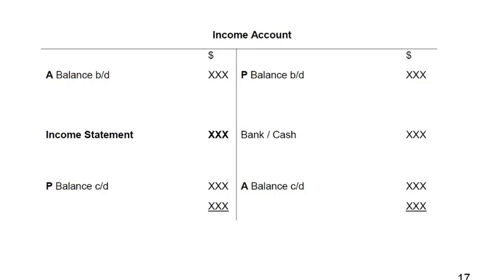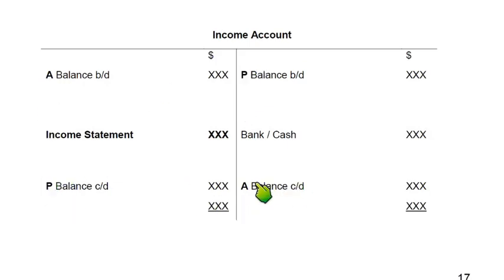Sometimes the examiner writes rent receivable — it is actually a rent received account. There can also be advertising income account. Any sort of income account will use this APPA mnemonic. Again, APPA is just a memory aid — I recommend not using it in the exam. Write it with a pencil and remove it once the question is solved.